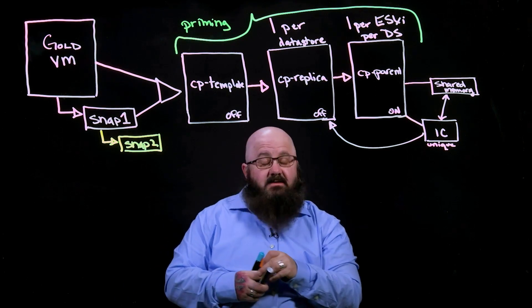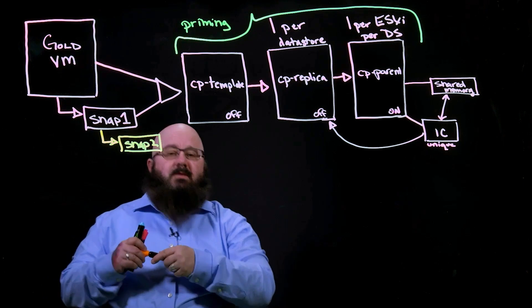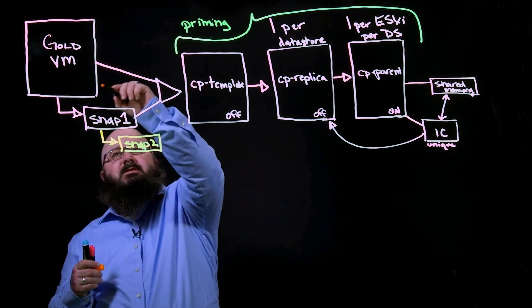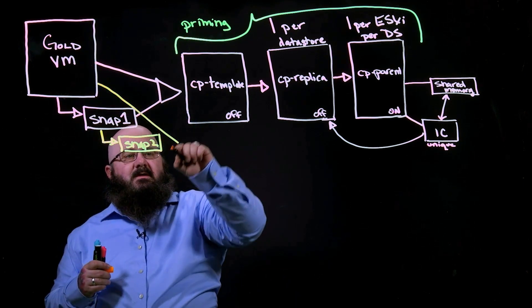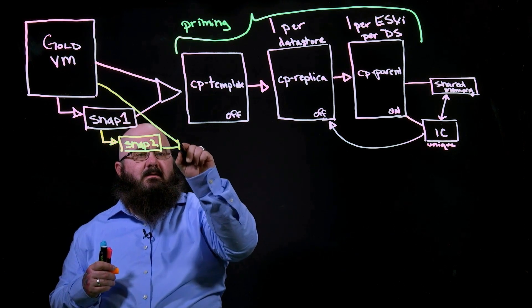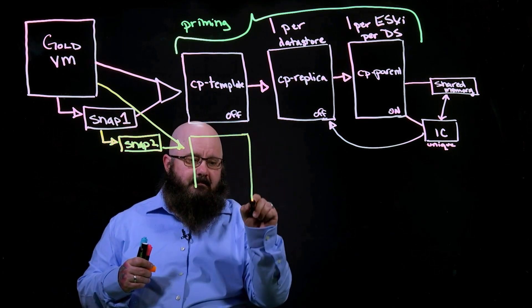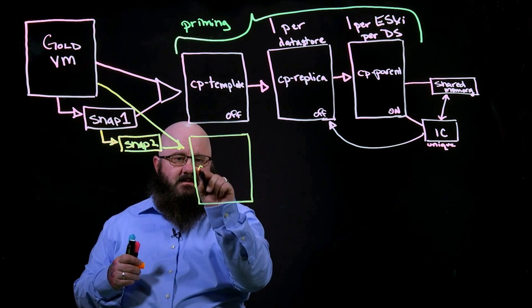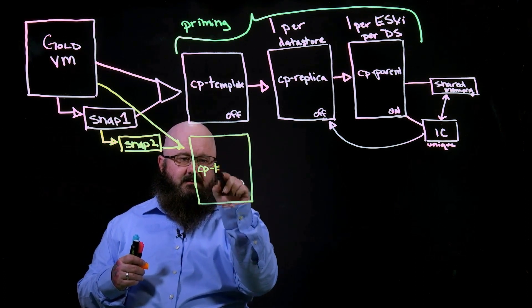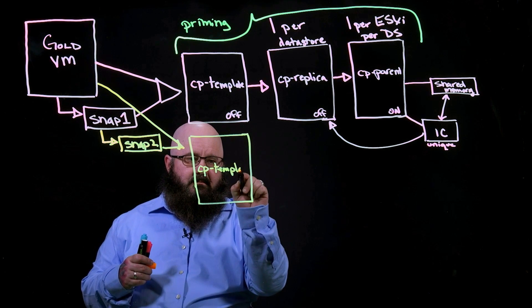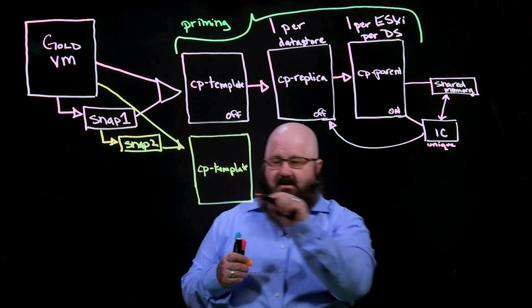All right. So I have my new snapshot. I have my gold VM. What are we going to do when we do our instant clones? Of course, we're going to start by creating a new template. So here's my new CP template. And it's off, right?